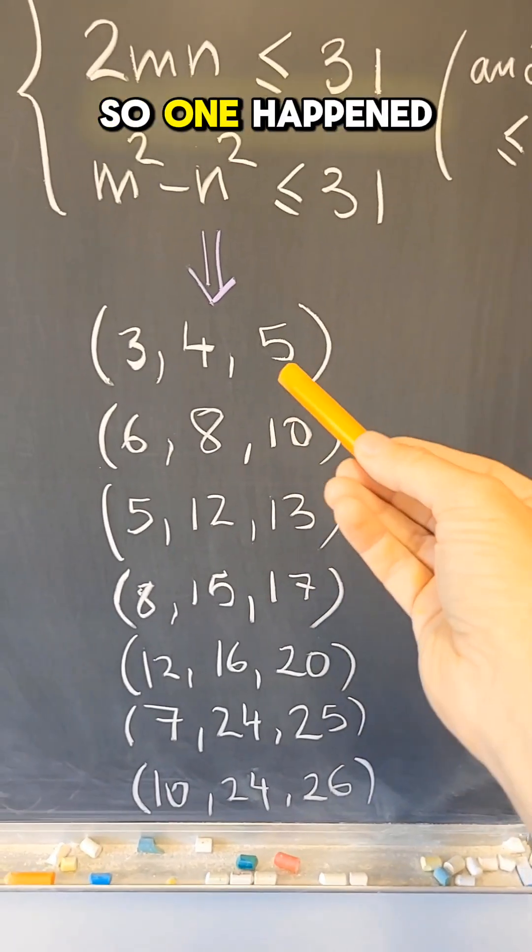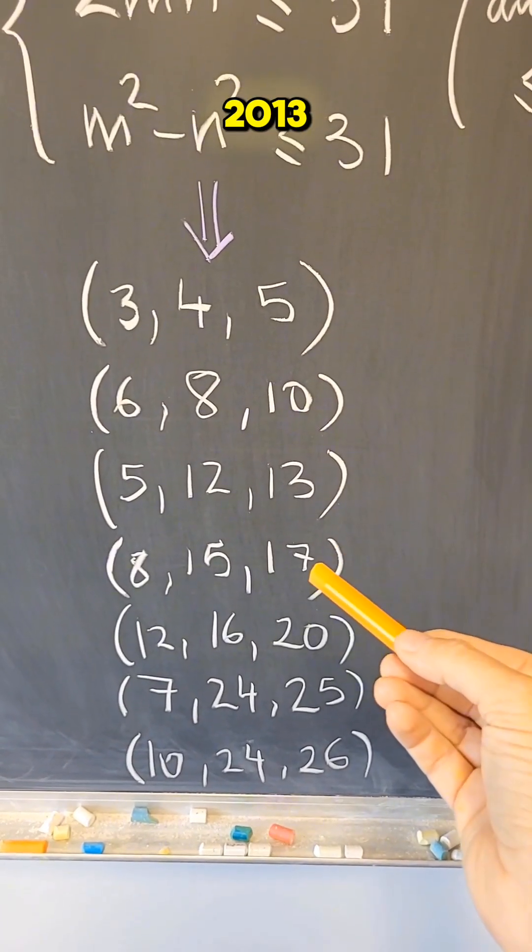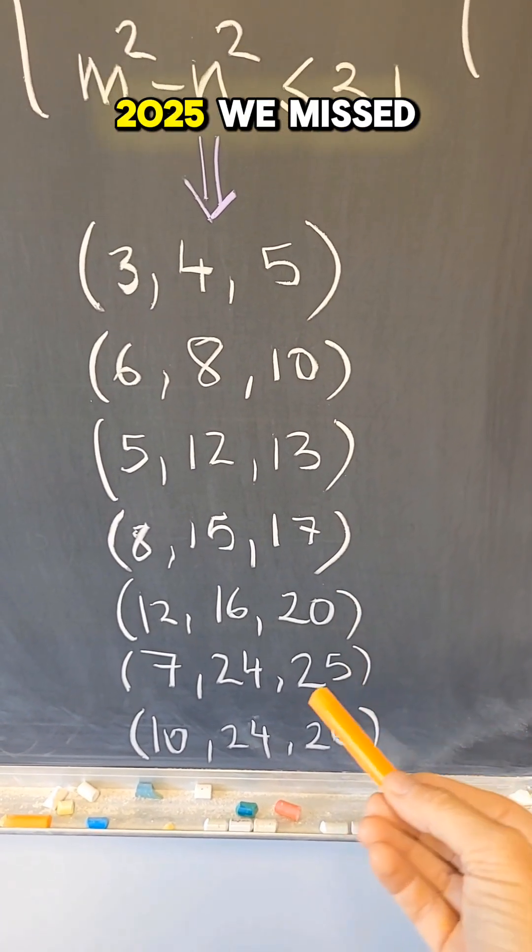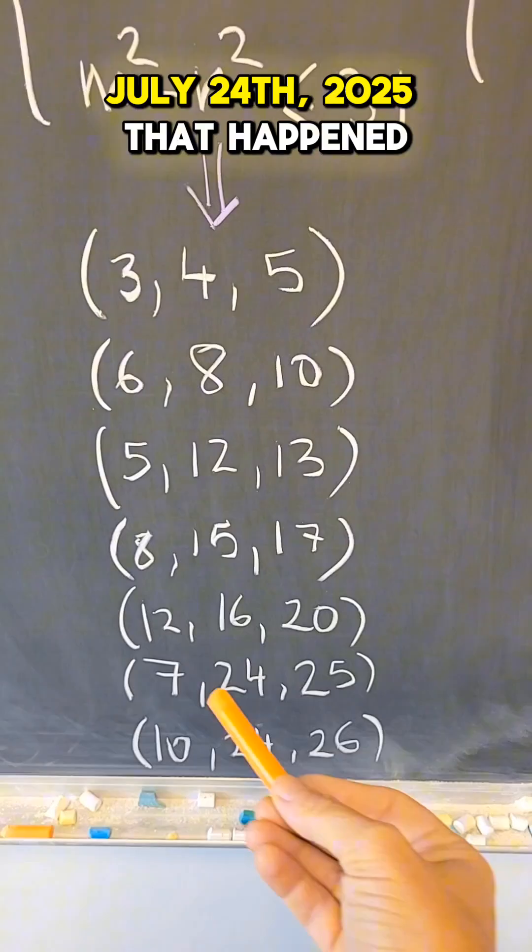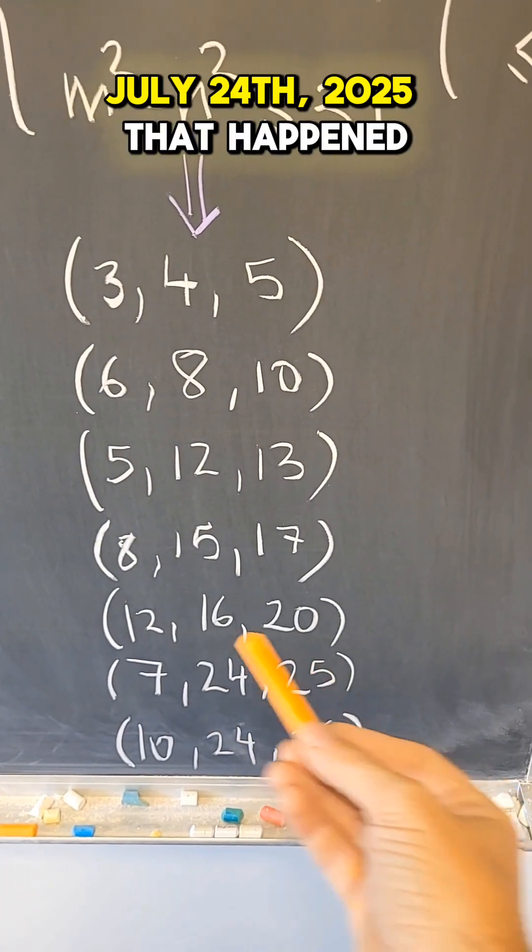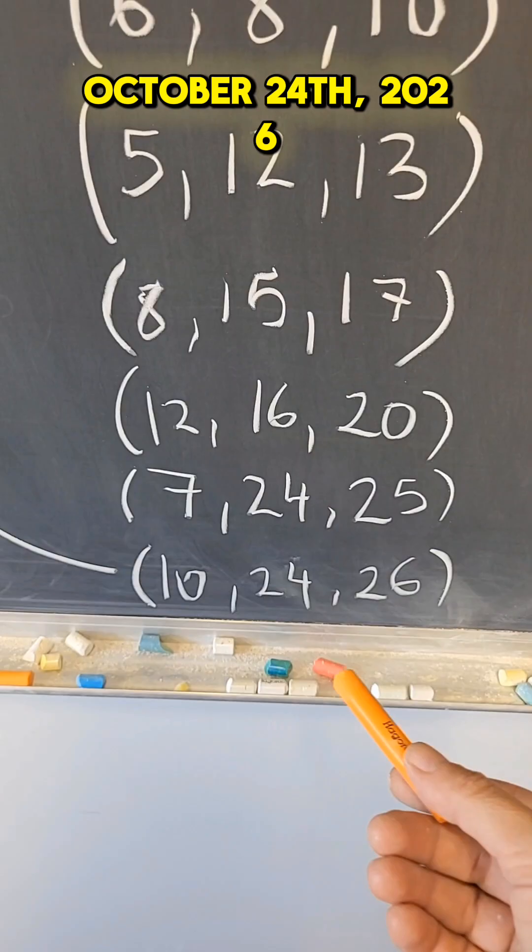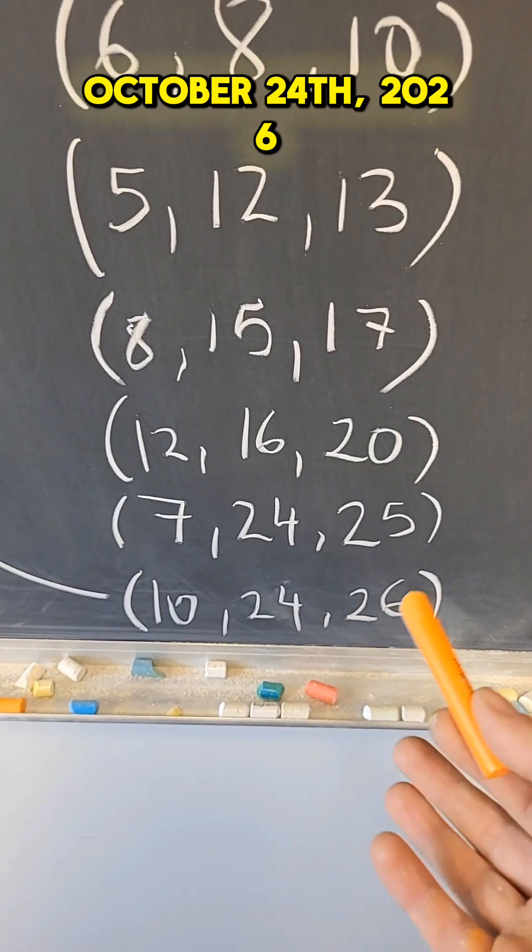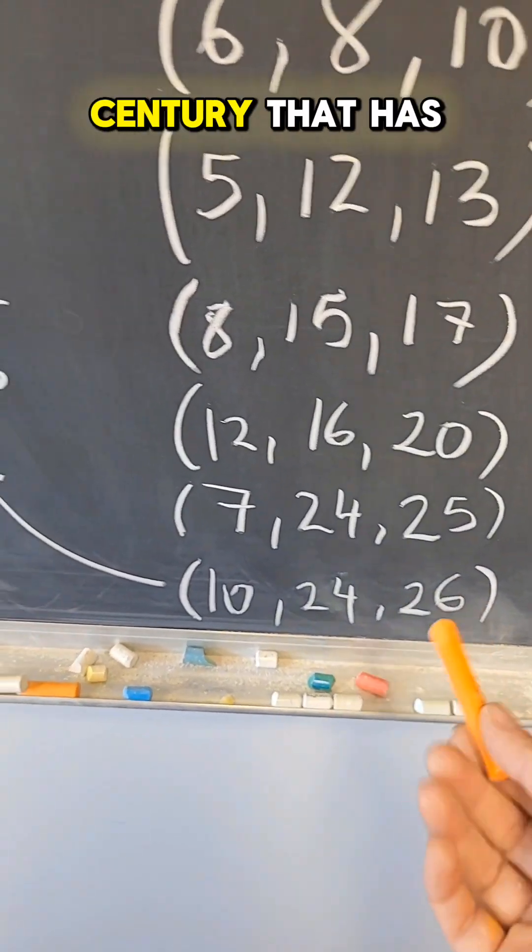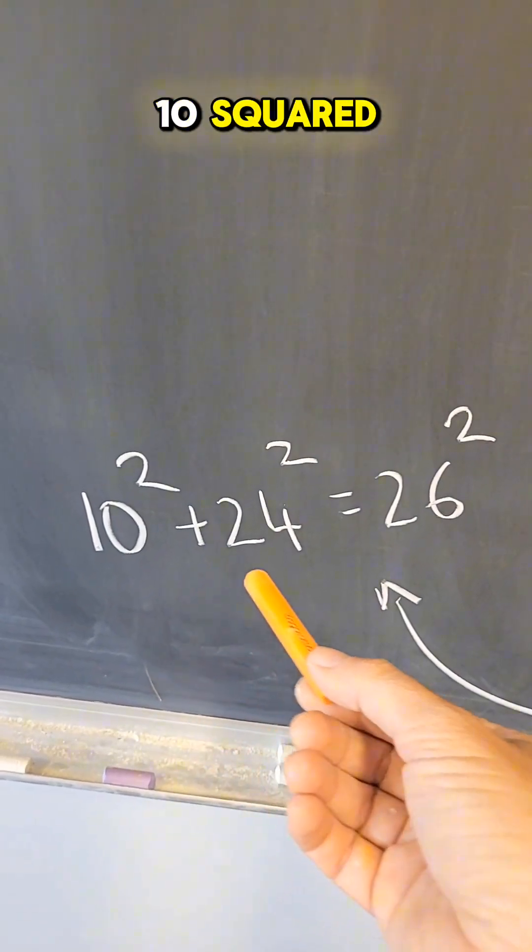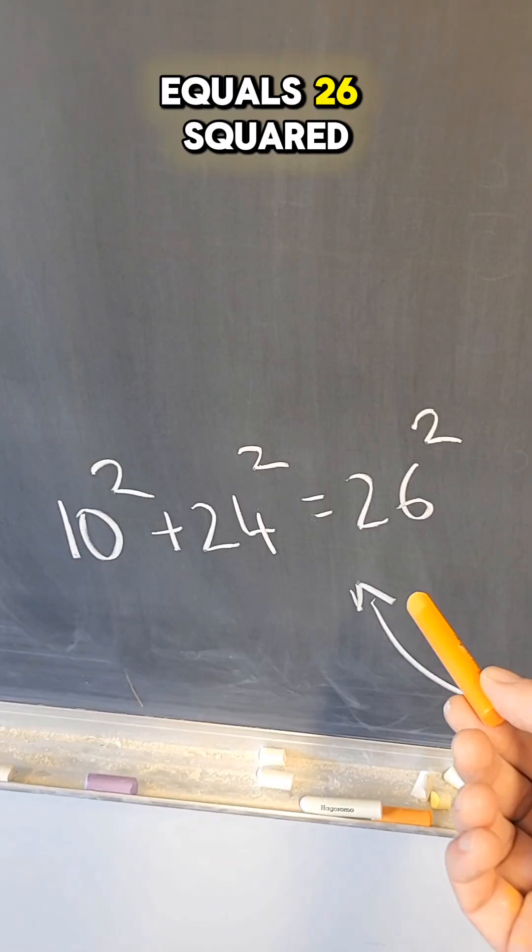So one happened in 2005, 2010, 2013, 2017, 2020, 2025. We missed one, July 24th, 2025, that happened, and there will be one in 2026. October 24th, 2026 is the last date of the century that has the property that 10 squared plus 24 squared equals 26 squared.